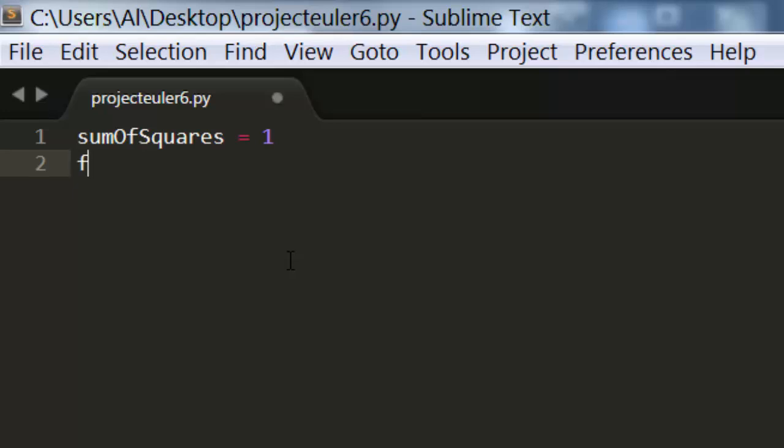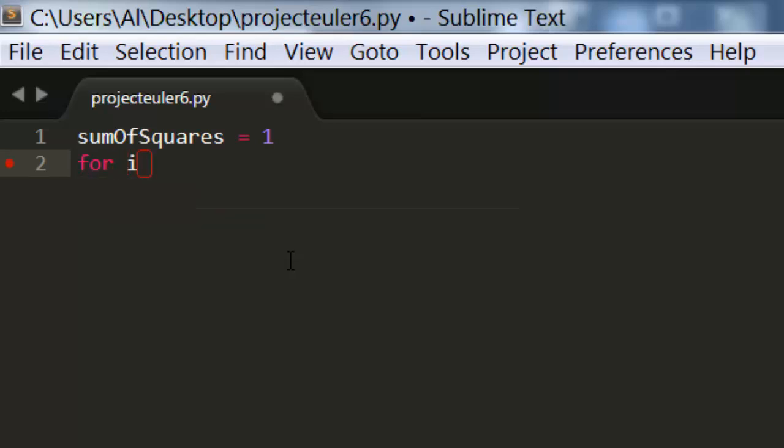So instead I'm going to create a for loop to do this calculation for us. I'm going to have a number i that starts at 1 and goes all the way up to, but not including, 101. That way it goes up to the number 100.